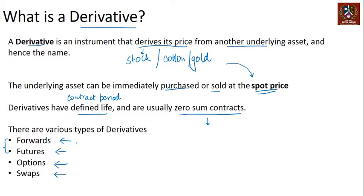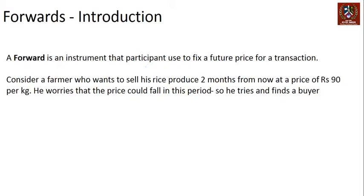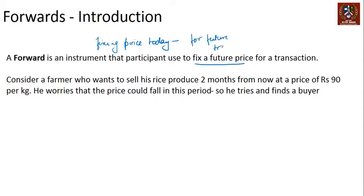Let's build the premise around what a forward is and how it works. A forward is an instrument that a participant uses to fix a future price for a particular transaction. The transaction has to happen in the future; you're fixing the price today. It's like saying: after two months, I will buy something from you at a certain price. That is what a forward agreement is.